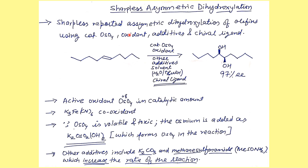Sharpless asymmetric dihydroxylation is one of the powerful techniques for the dihydroxylation of olefins where we use osmium tetroxide along with a co-oxidant, additives, solvent, and a chiral ligand, which results in asymmetric induction around the carbon-carbon double bond to give the dihydroxyl compound in very high enantioselectivity. The active oxidant is osmium tetroxide, and we use potassium ferricyanide as a co-oxidant whose job is to regenerate the osmium tetroxide at the end of the reaction so that it can be used in catalytic amount.